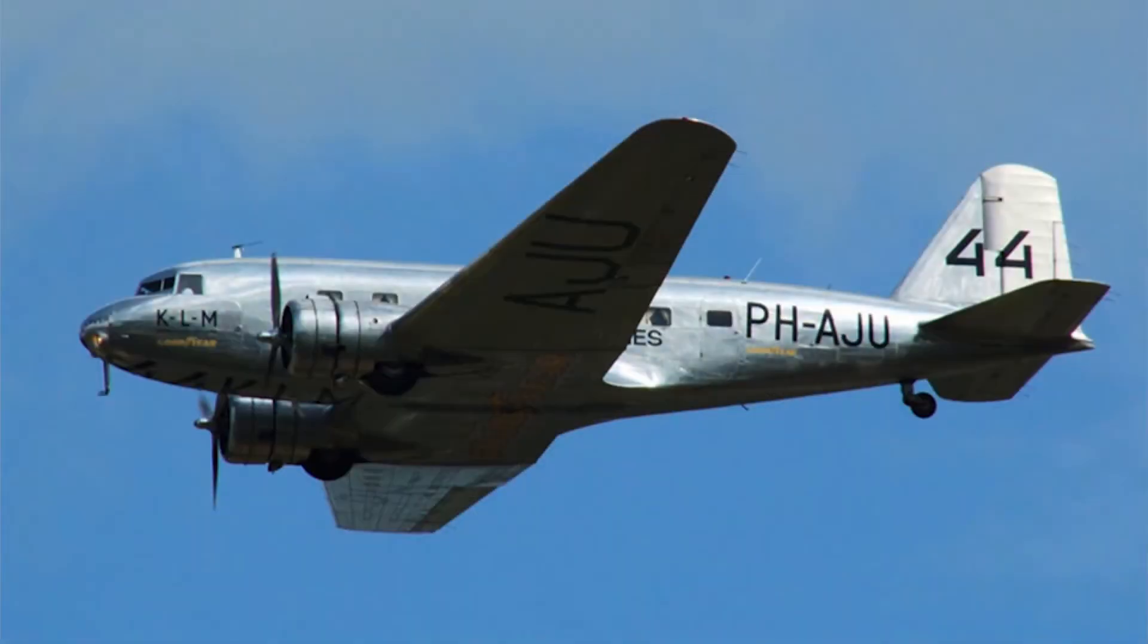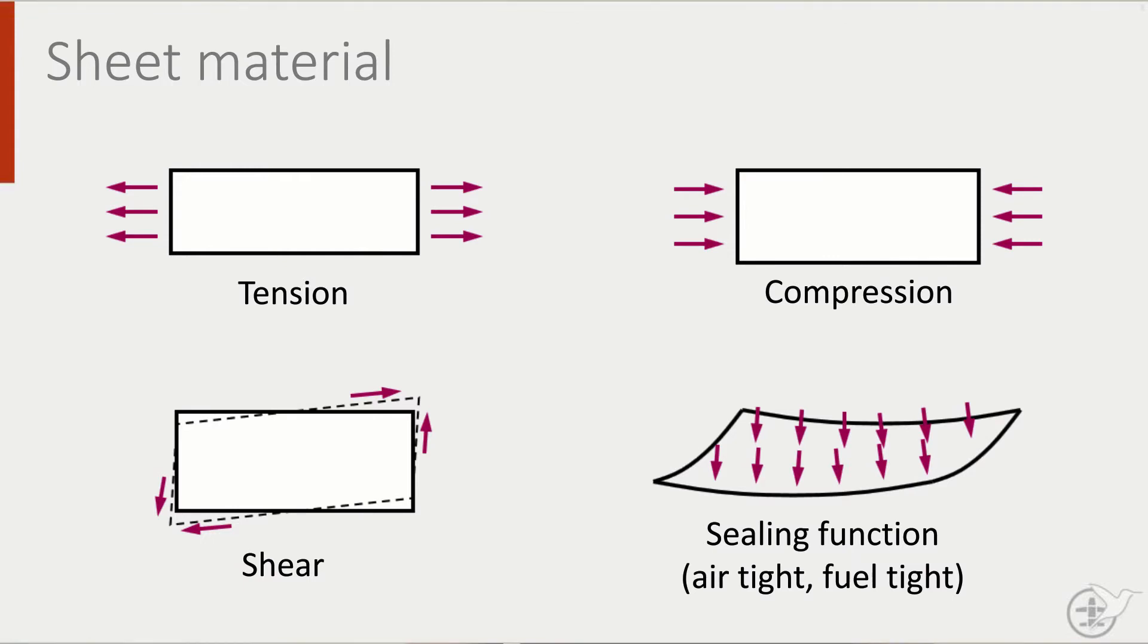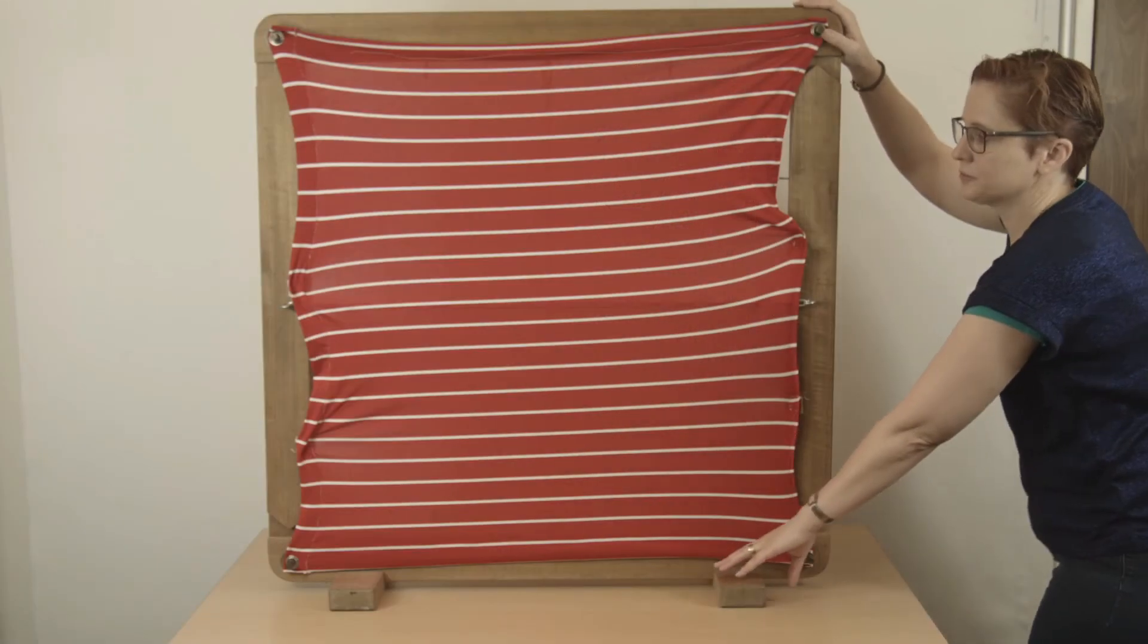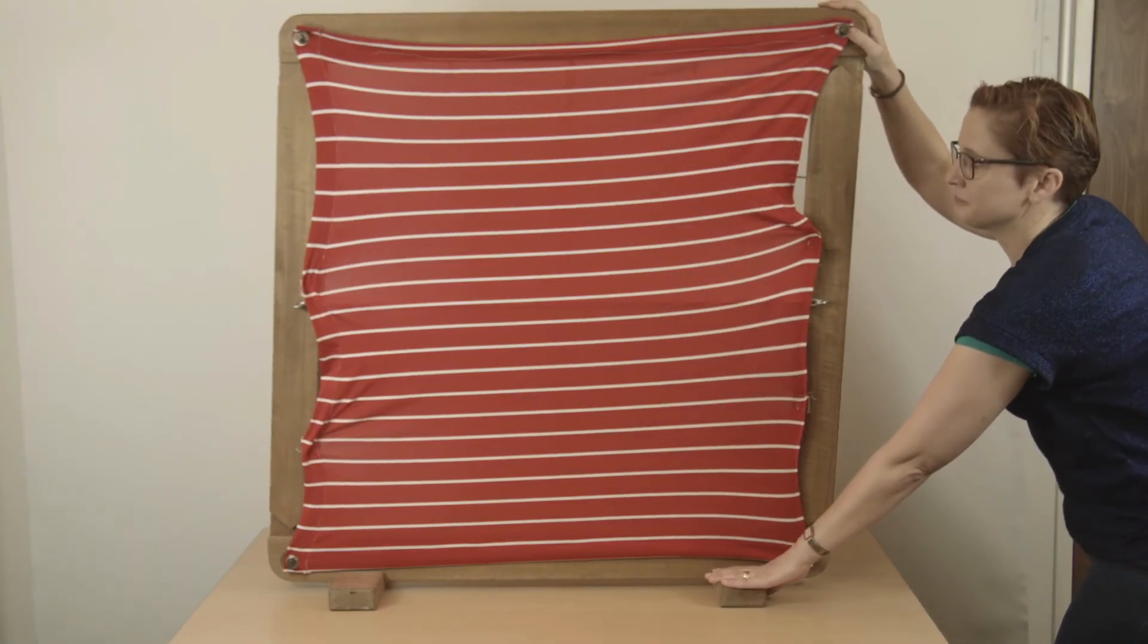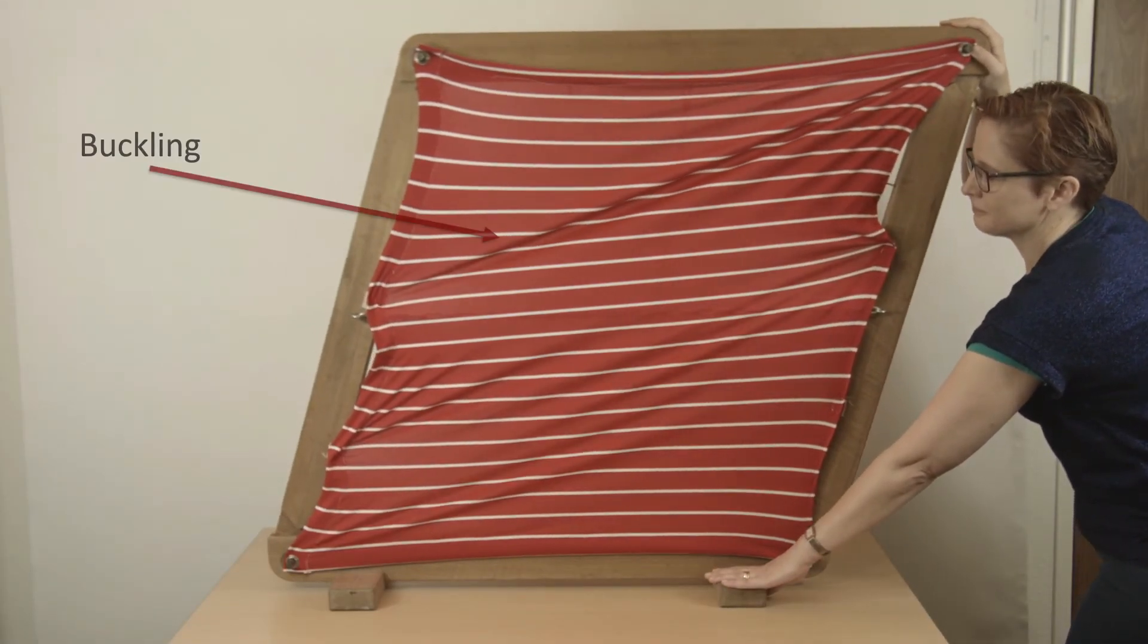As aircraft design evolved, a shift occurred from fabric covered trusses to metal sheets which had load bearing capability. The advantage is that sheet material can also carry shear, whereas the diagonal rod or wire can only perform its function in tension or compression. If we were to put sheet material in our frame and load it, we can see that the sheet carries load and that it starts to buckle a little bit.